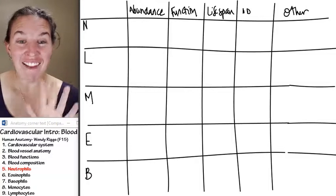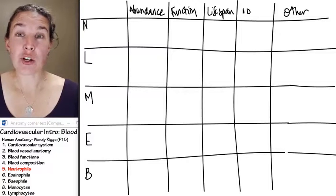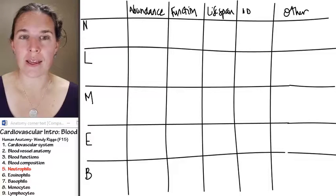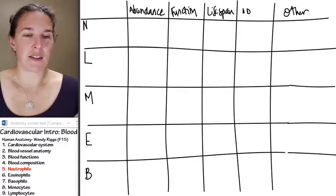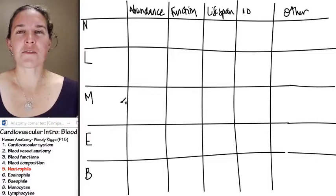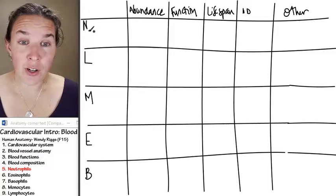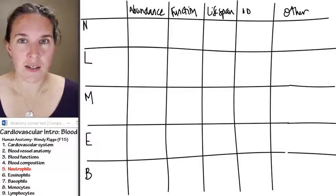Leukocytes. We have five flavors of leukocytes that we're going to talk about. And you're going to remember your leukocytes and how abundant they are based on this not very nice mnemonic device. Never let monkeys eat bananas.